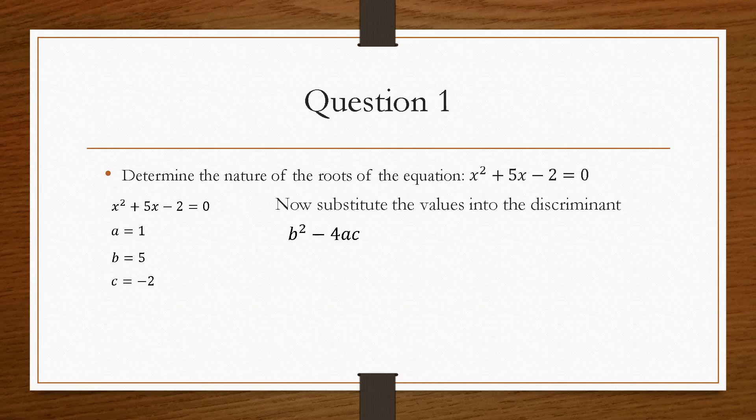Then if we substitute these into the discriminant, what we are interested in is the sign. So not necessarily the value, we are interested in the sign of the value. So we get 25 plus 8, which will give us 33.